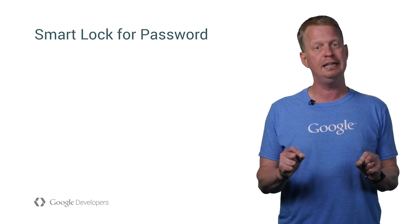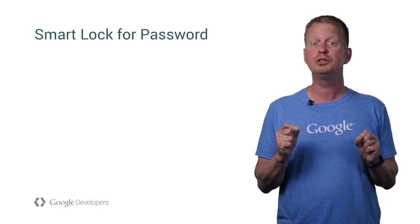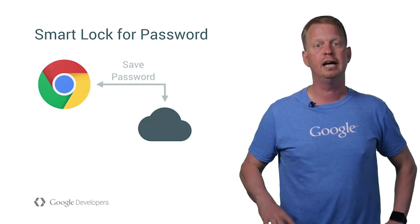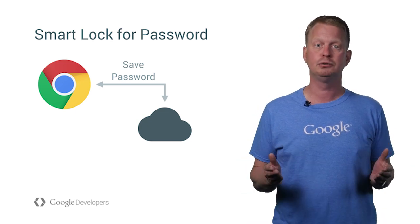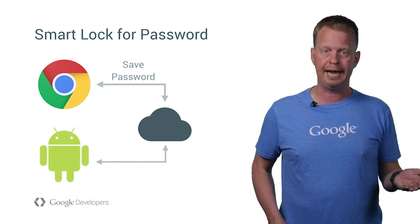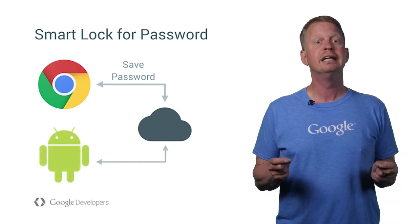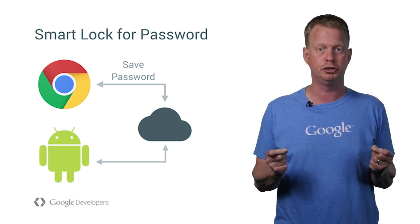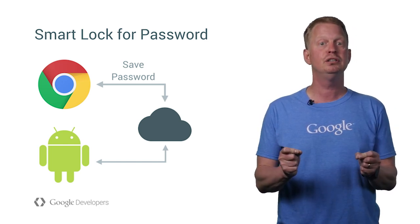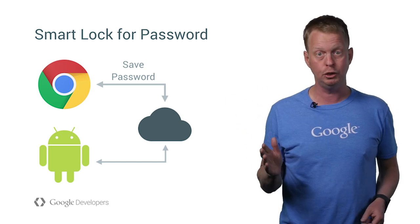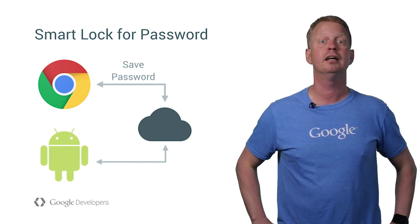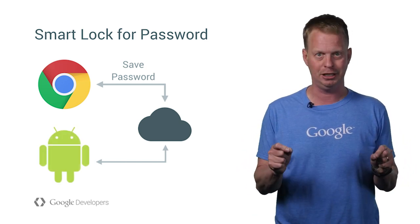Another feature in this release is Smart Lock for Passwords, which allows you to be automatically signed in to a Chrome website or Android app with your Google account. Say you sign into a website and choose to save the password — these passwords get securely saved in the cloud. At a later time, you decide to start a corresponding Android app, and the Smart Lock for Password API can then allow a sign-in simply by selecting the stored credential. This is possible since you previously stored the password from Chrome and the Android device has your Google account registered. Be sure to check out the details in the reference sections at the end of this video.